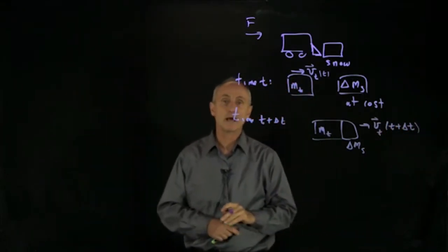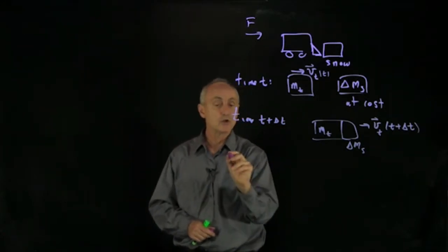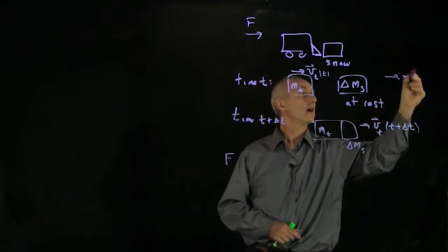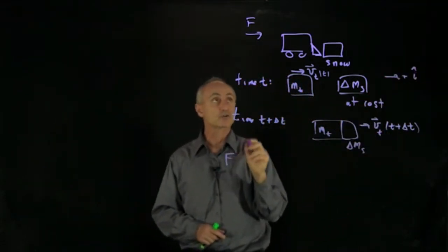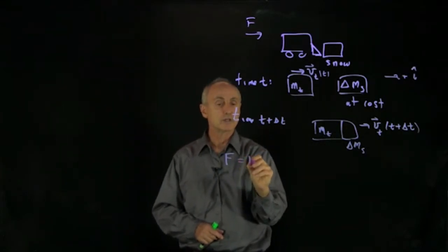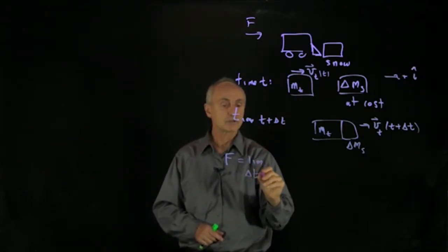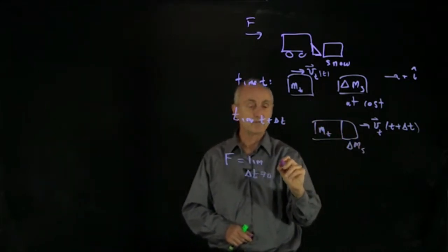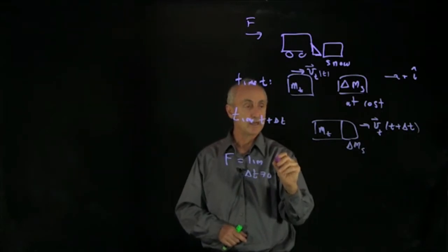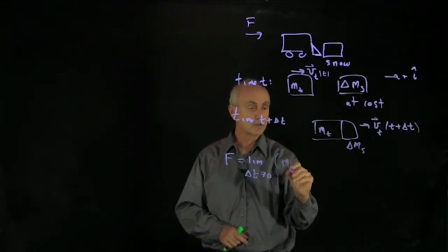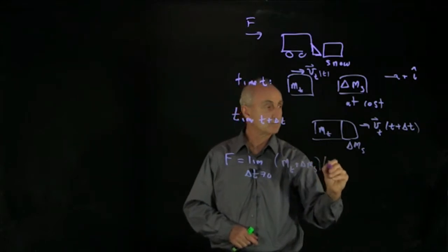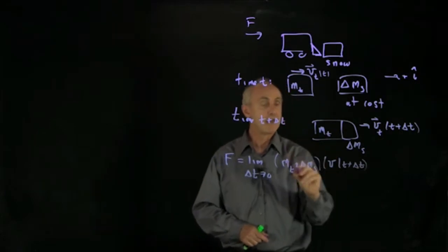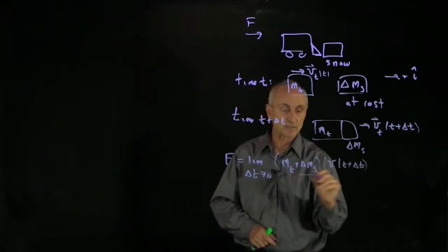Now we want to write down our momentum law. We have our external force. Let's call this the plus i hat direction. We have our external force equal to the limit as delta t goes to 0 of the momentum at time t. So we have t plus delta t, so what we have is the mass of the truck plus delta ms times v of t plus delta t. And we have to subtract, that's divided by delta t.